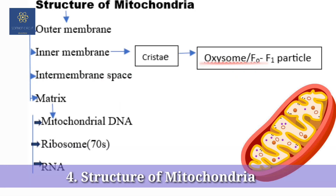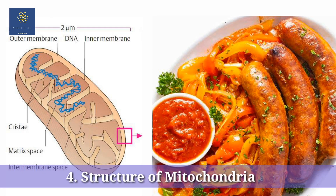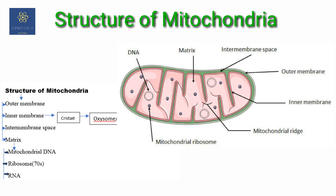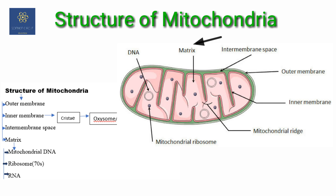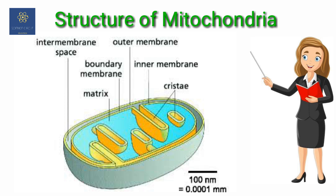The mitochondria is shaped almost like a sausage. It is a double membrane structure having four main parts: the outer membrane, inner membrane, inter-membrane space, and matrix. Each mitochondria is a double membrane-bound structure.